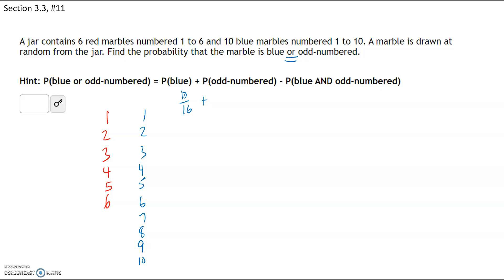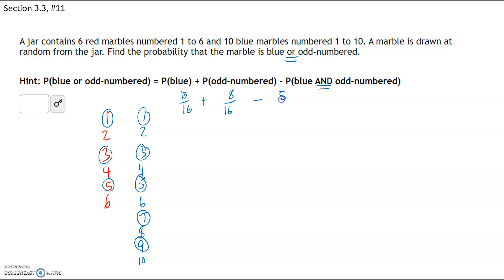How many odd-numbered marbles do we have? Counting all the odd numbers across both colors, we have 8 marbles that are odd numbered, so that's 8 out of 16. But some marbles got double counted — the ones that are blue and odd were counted twice. We have to subtract those off. Counting blue marbles that are also odd numbered, we get 5 out of 16. So we have 10 plus 8 minus 5, which is 13 out of 16.